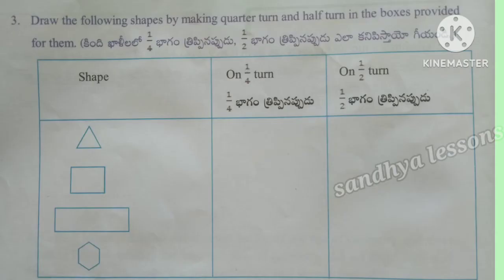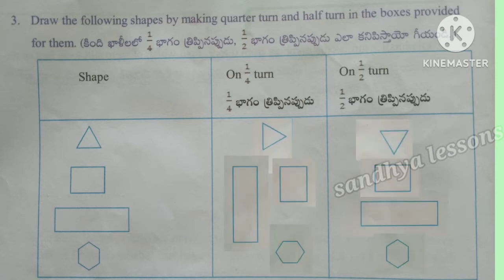Third question: Trace the following shapes by making quarter turn and half turn in the boxes provided.